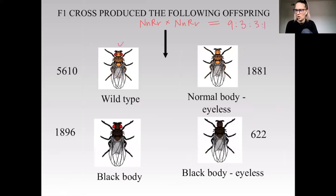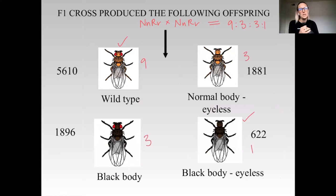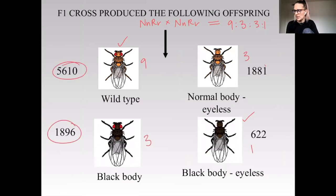We see all wild type for the nine, all recessive for the one, and then body color normal and eye color normal for the other groups. So that's our nine to three to three to one ratio. And look at these numbers that we get out — those are going to be important.